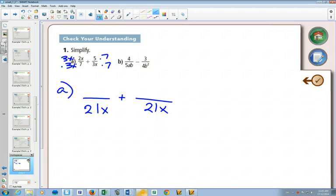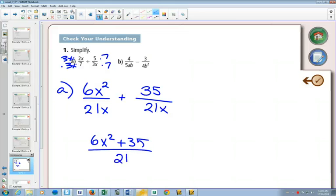The top of this fraction is going to be 6x squared because 3x times 2x is 6x squared. And the top of the other fraction? 35. So now we have a common denominator. We can add our fractions. 6x squared plus 35 all over 21x.